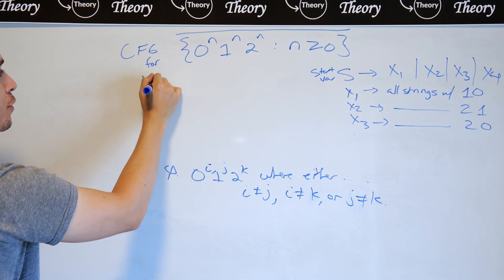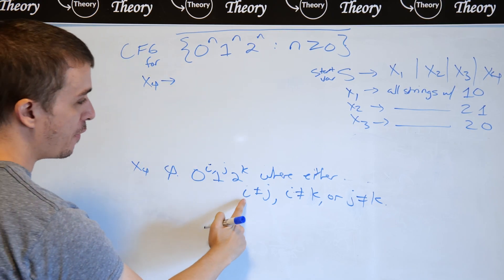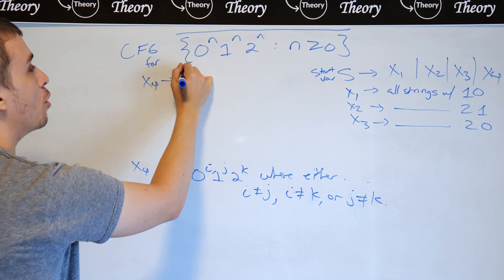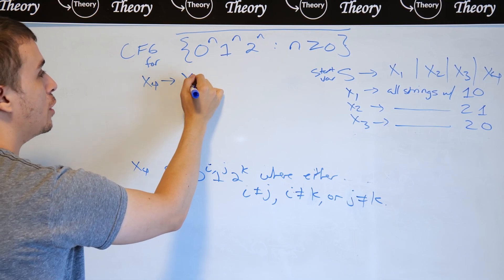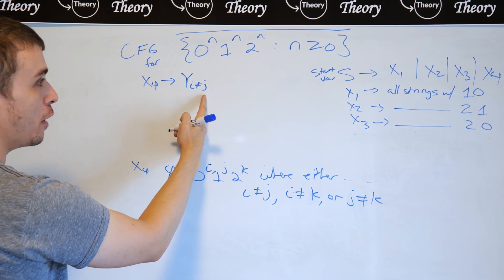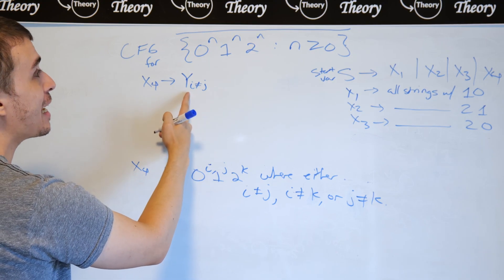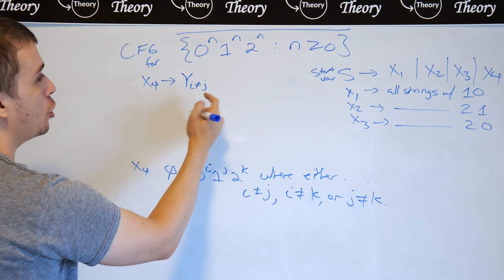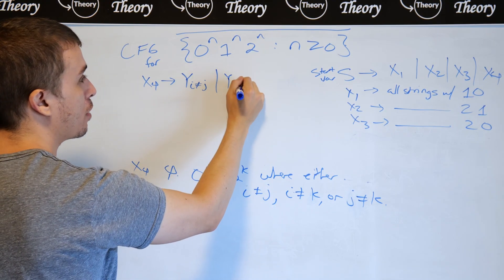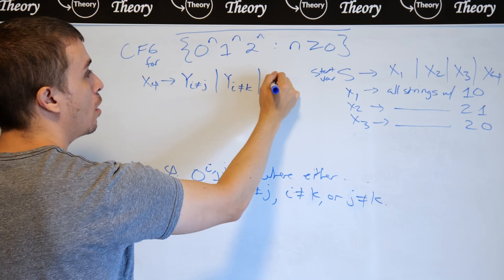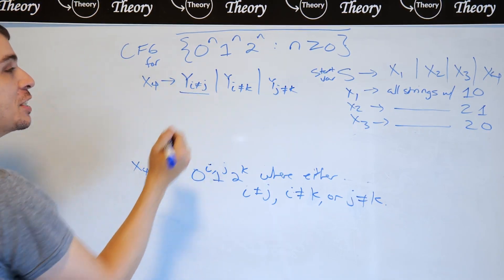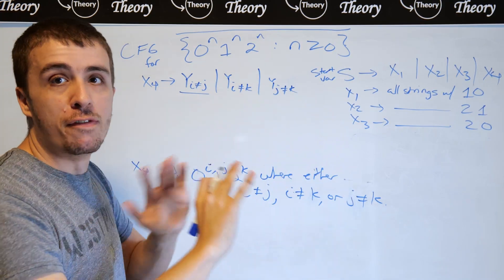So x4 is going to make three variables, which is one for each of these three cases. So I'm going to have a y, which is going to say i not equal to j. That is the variable name corresponding to making strings where i is not equal to j. Or I have i not equal to k, or yj not equal to k. And I'm only going to focus on that one, but all of the other ones are very, very similar.